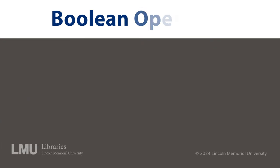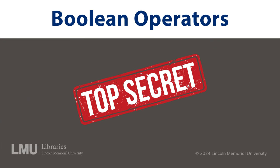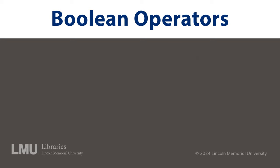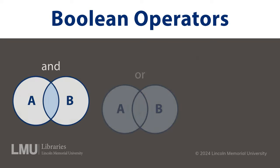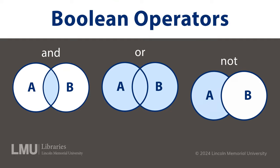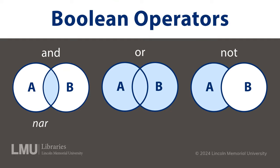Boolean Operators are like secret codes that tell the search engine exactly what you're looking for. The three most powerful are AND, OR, and NOT. AND narrows, OR expands, NOT excludes.